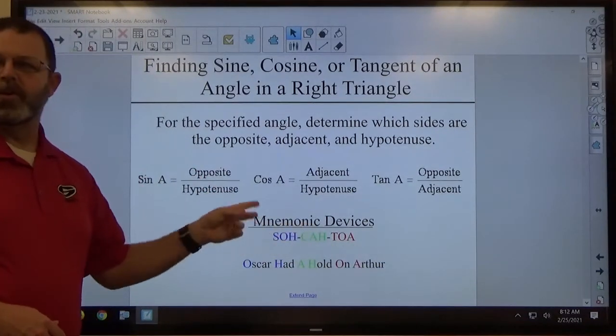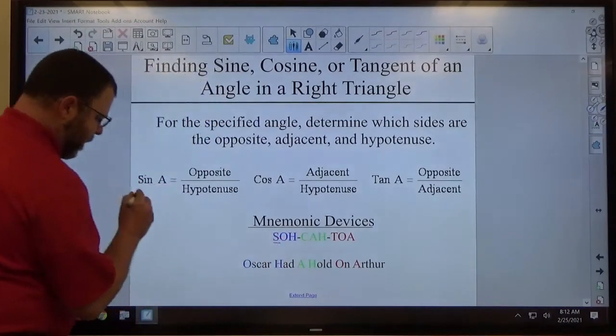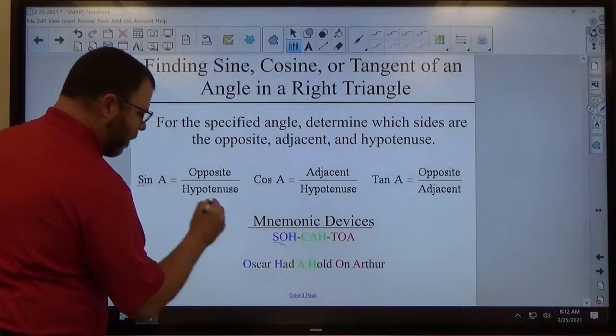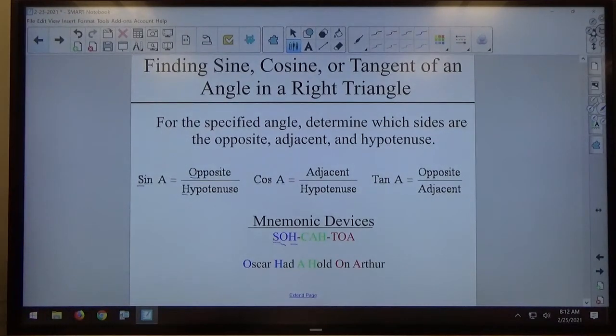Again, I have to first SOH CAH TOA myself. So again, all this is doing is S for sine, O for opposite, H for hypotenuse. It's just telling you how to memorize those facts.